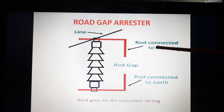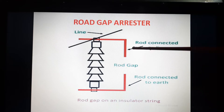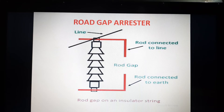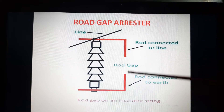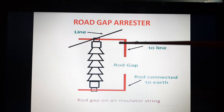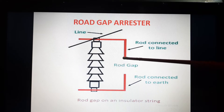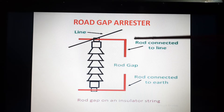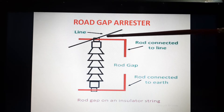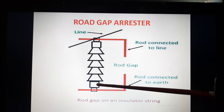This is the figure of the rod gap arrestor, which is connected across the bushing of the transformer. It is the simplest form of arrestor. It consists of two rods — 1.5 centimeter diameter rods which are bent at right angles with a gap in between them, as shown in the figure. One rod is connected to the line and another rod is connected to the earth.